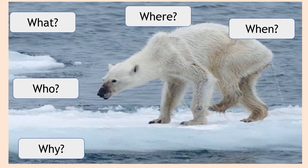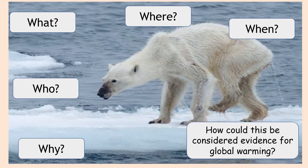A few questions to get us started. We've got an image on the board and we need to think about how it links to climate change — what's going on, where, when, who and why. How could this be considered evidence for global warming? Have a go at answering those five questions — jot down some ideas about what you think this image is showing us and how it's relevant to climate change. Pause the video now to have a go at those answers.